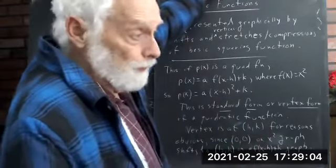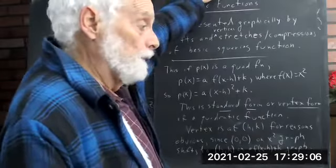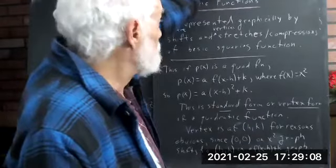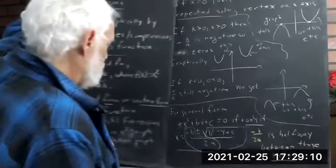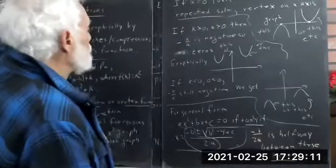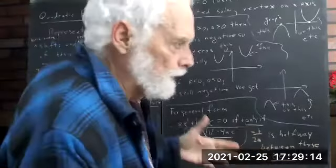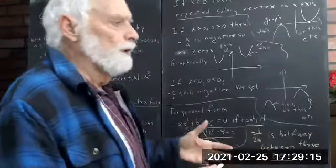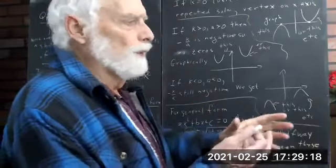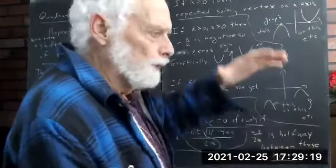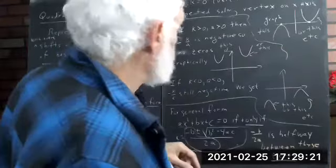Now there are other forms. There's a general form we'll see in a minute — it's quite valuable and useful depending on the situation — but the vertex form tells you more about the graph: specifically where the vertex is and what the vertical stretch or compression of the original function is.